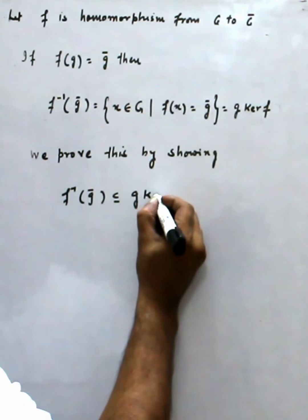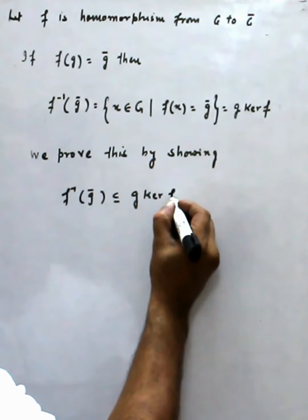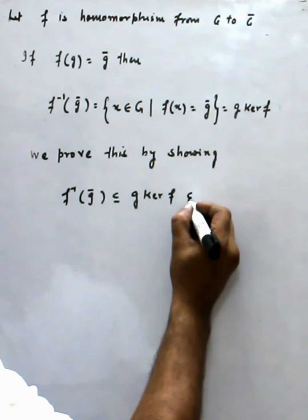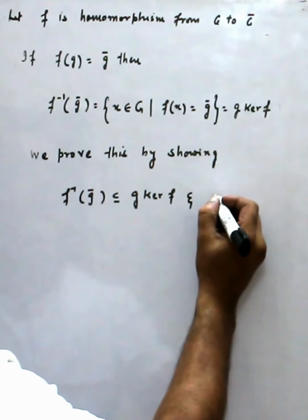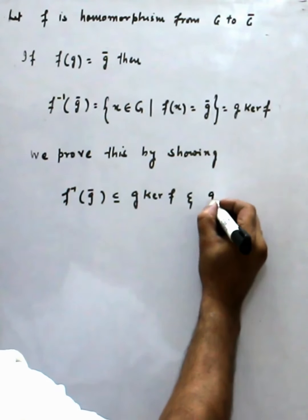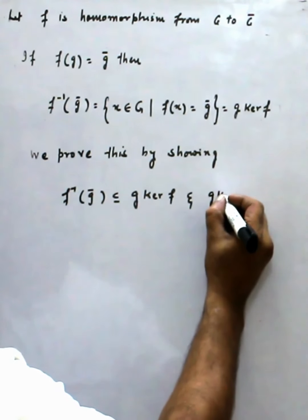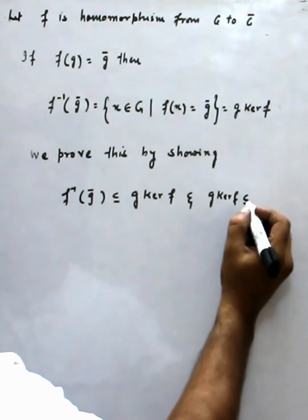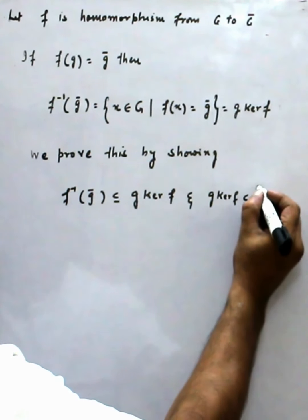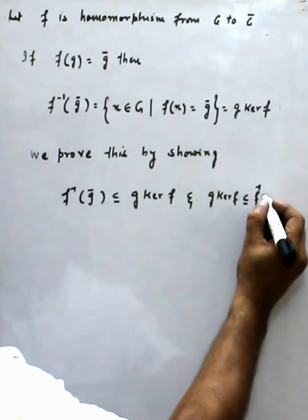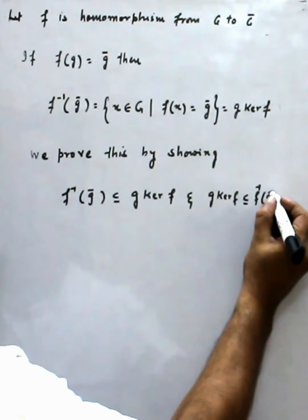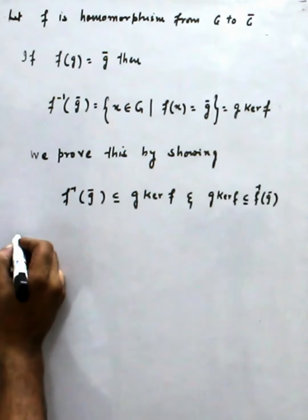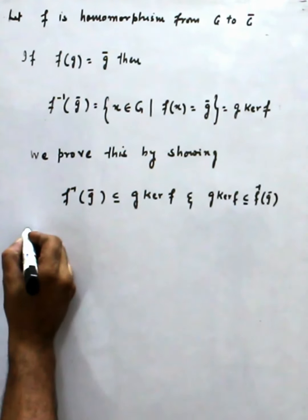And also gKer(f) ⊆ f-inverse(ḡ). So in two parts we show the first part.